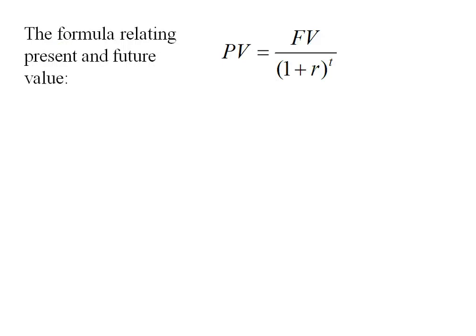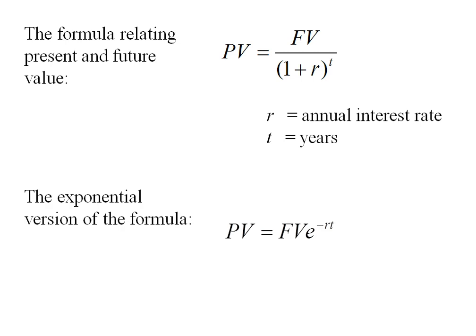Here's the formula that relates present and future value, where R stands for the annual interest rate and T stands for the number of years. If we instead want to use the exponential version of the formula, it looks like this: future value times the exponential raised to the negative R times T.